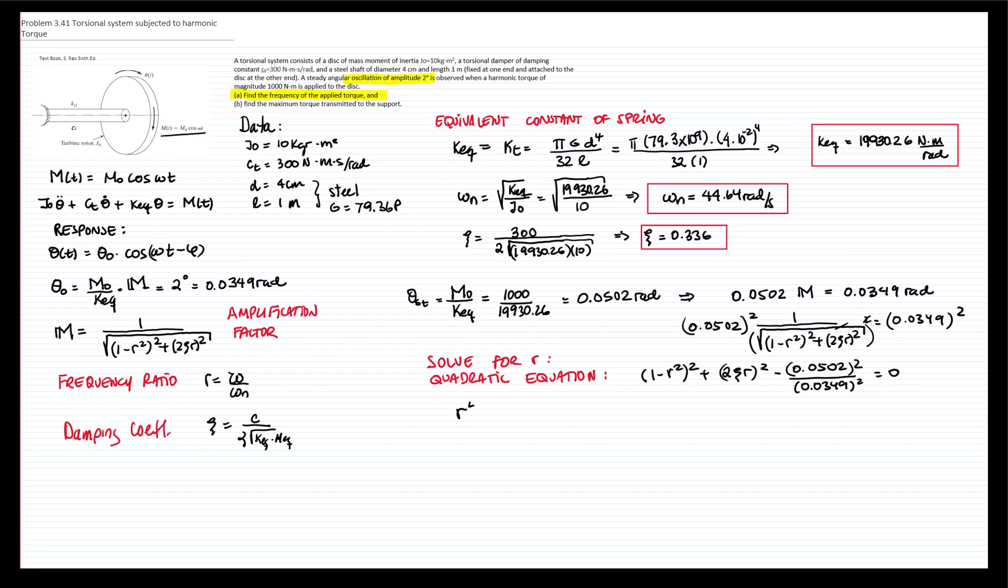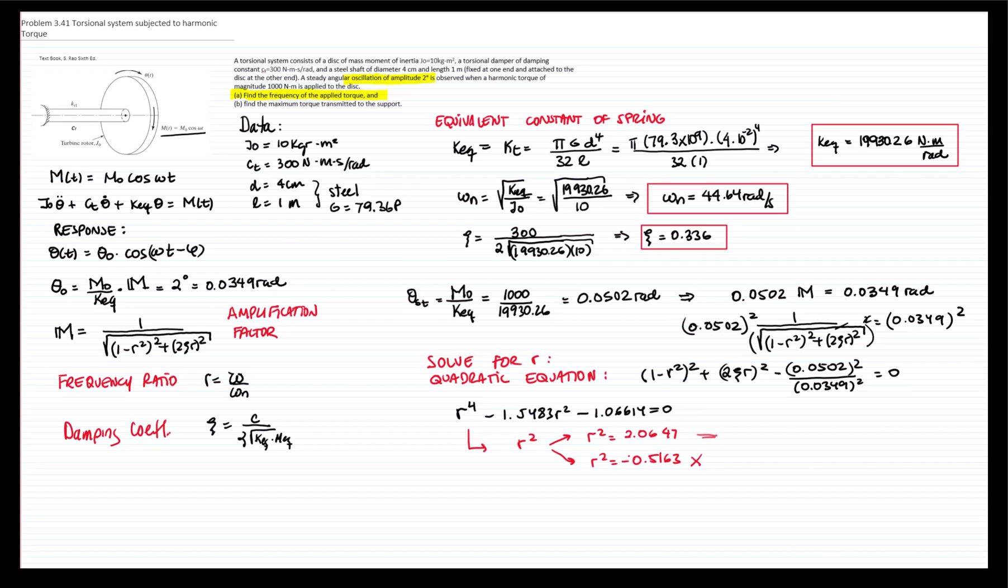That leads to r to the fourth minus 1.5483 r squared minus 1.0661 equals zero. I will solve for r squared and I get two solutions. r squared equals to 0.0647 and r squared equals to negative 0.5163. Obviously, the second equation does not have any solution and I get this solution. This is r equals to 1.4369.